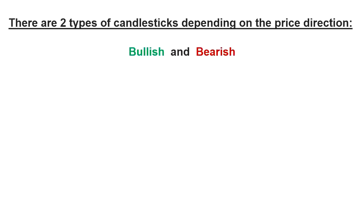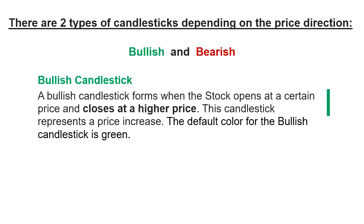So there are two types of candlesticks depending on the price direction: a bullish candlestick and a bearish candlestick. In the case of a bullish candlestick, it forms when the stock price opens at a certain price and closes at a higher price. This candlestick represents a price increase and the default color is green.